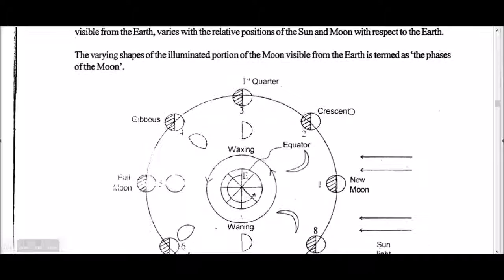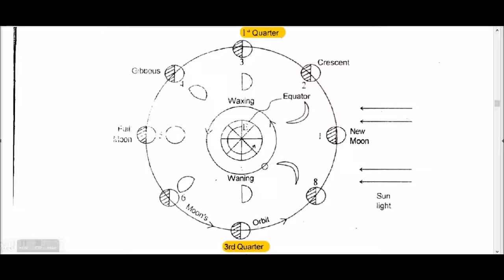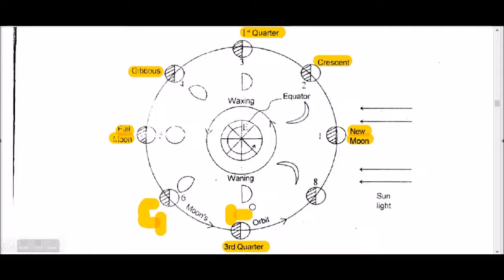The phases of the Moon we need to remember. Starting from new moon: new moon, crescent, half moon, gibbous, and full moon — then again gibbous, half moon, and crescent. I remember the sequence as: new, crescent, half, gibbous, full — then back through gibbous, half, crescent.